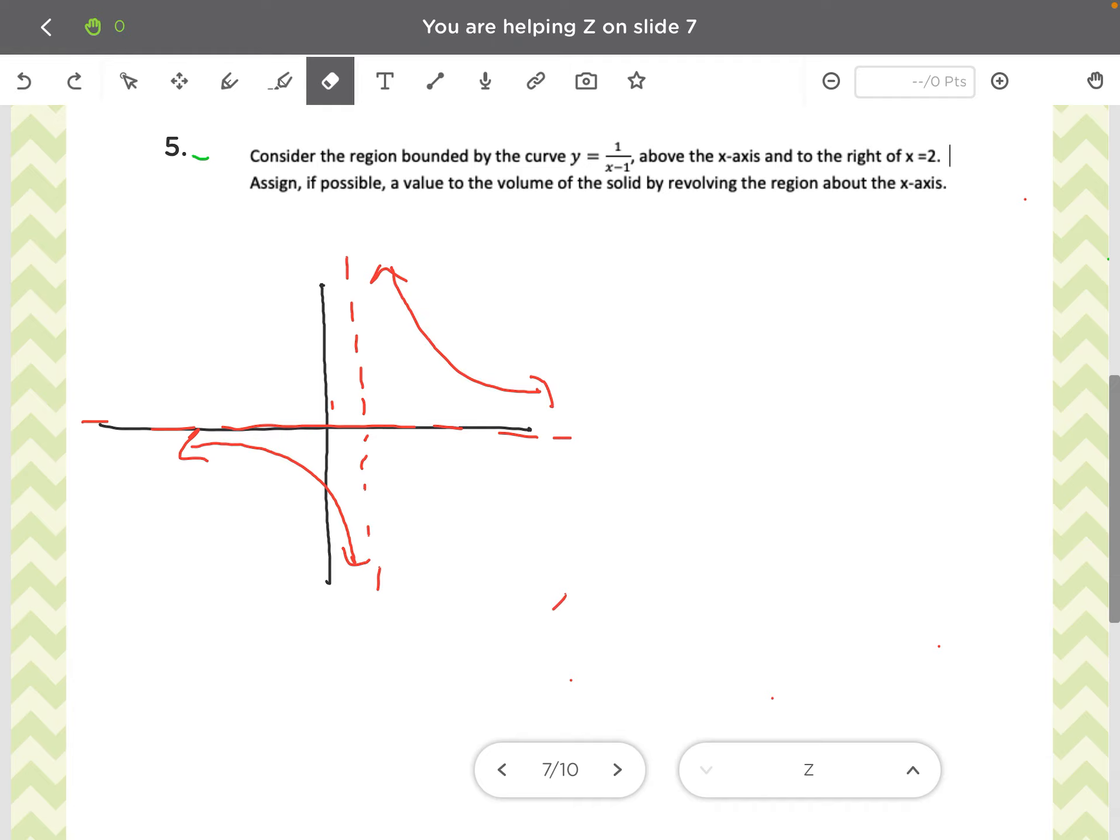Notice you have two branches, vertical asymptote at x equals 1. But we're only interested in the graph above the x-axis and to the right of x equals 2.